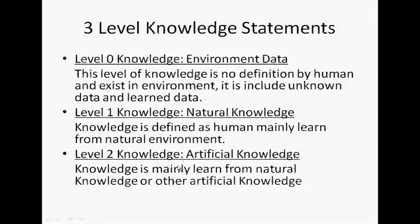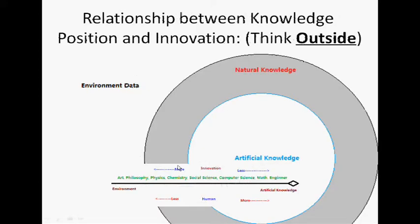This map expresses the relationship between knowledge position and innovation. If the knowledge is closer to the center of the domain, it will have less innovation already, because more human-made definitions will make less space for imagination and creation. And if you want to make innovation for this kind of knowledge, you have to think outside of that domain.